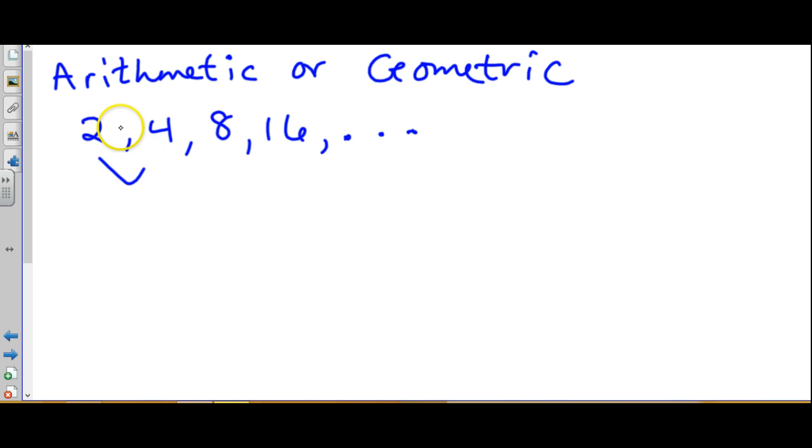They're also going to ask you to find whether a series is arithmetic or geometric. So when they do that, they're going to just give you a random series. You're not sure which one it is. You don't know if we're multiplying or adding. It doesn't matter which one you check first. I'm going to check addition first. Looking from 2 to 4, 2 plus 2 makes 4. Looking from 4 to 8, 4 plus 4 makes 8. So right now we know this is not arithmetic. So now we check multiply. 2 times 2 makes 4, 4 times 2 makes 8, 8 times 2 makes 16. This is geometric.